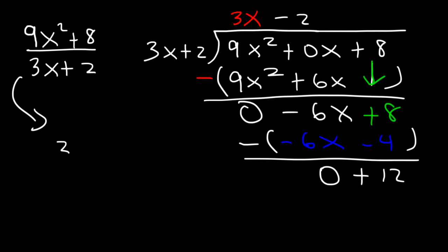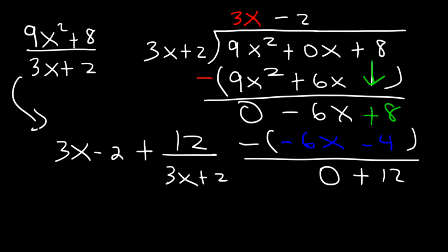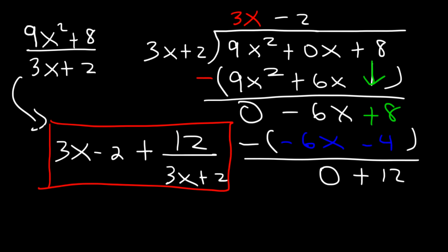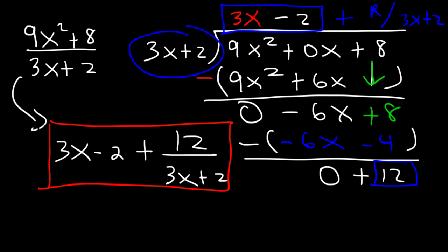The answer is 3x minus 2, plus the remainder 12 divided by 3x plus 2. Whenever you have a remainder, your final answer is the quotient plus the remainder divided by the divisor — in this case, 3x plus 2. If there is no remainder, the answer would simply be 3x minus 2. That is the final example.